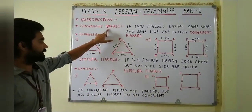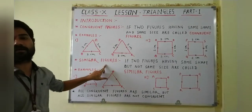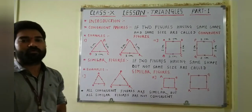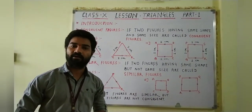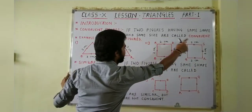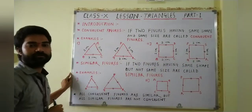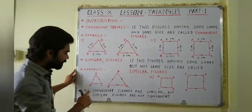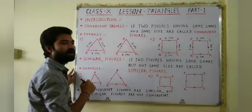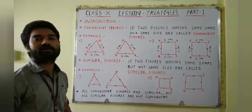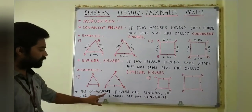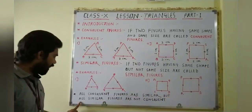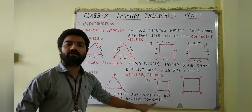According to the definitions of congruent figures and similar figures, we conclude that all congruent figures are similar, but all similar figures are not congruent.